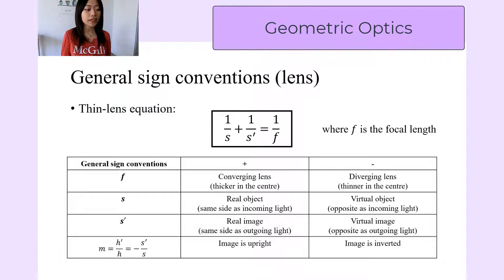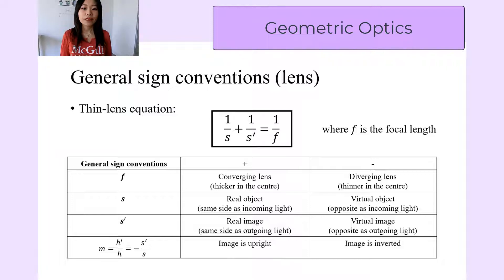And s prime is the image distance. It is positive when the image is on the same side as the outgoing light, and it is negative when it is on the opposite side. When it's positive, we call the image real, and if s prime is negative, then we call the image a virtual image.